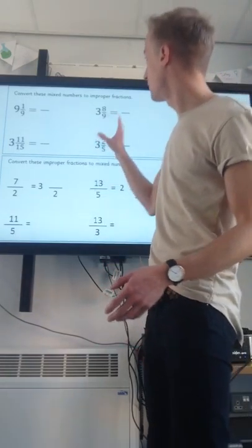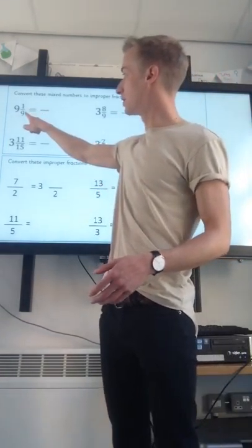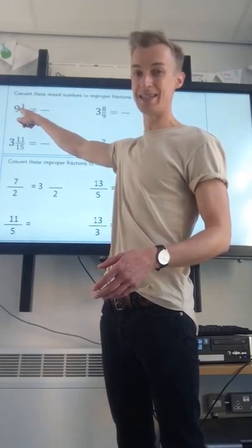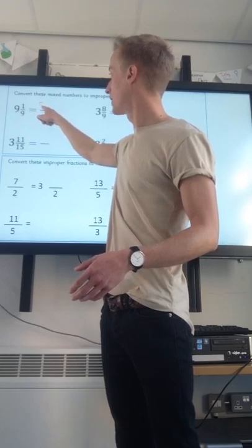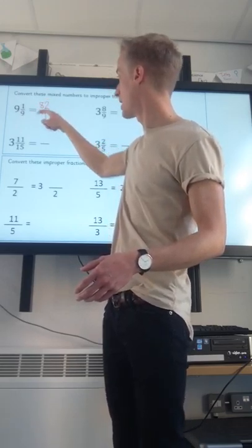Right, let's have a look at the reasoning, converting mixed numbers to improper fractions. So I need to do the denominator times the integer. 9 times 9 is 81, add 1, makes 82 ninths.